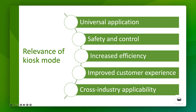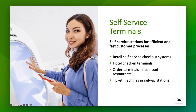Let's take a closer look at the different deployment scenarios, starting with self-service kiosks. These are self-service stations that allow customers to complete their requests quickly and efficiently. Examples include self-service checkout systems in retail stores, check-in terminals in hotels, ordering terminals in fast food restaurants, and ticket machines in train stations. These terminals allow users to place orders, check-in, or purchase tickets on their own, significantly reducing waiting times. The main benefit is increased customer satisfaction, as processes are much faster and more convenient. The use of such terminals also reduces the need for staff, resulting in long-term cost savings.